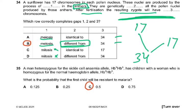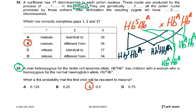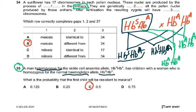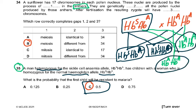Question 35: a man heterozygous for the sickle cell allele has children with a woman homozygous for the normal allele. The probability that the first child will be resistant to malaria is 0.5 — two out of four offspring carry the heterozygous sickle cell trait, which confers resistance to malaria. Individuals with normal hemoglobin are susceptible and may not survive long in malaria-endemic regions like parts of Africa.